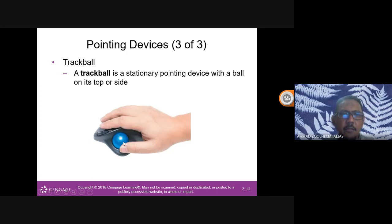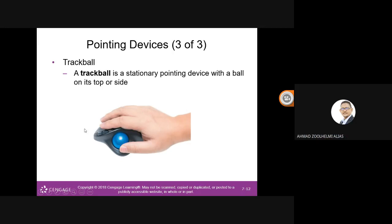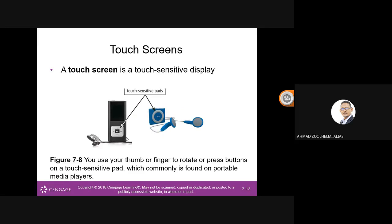A trackball is a stationary pointing device with a ball on its top or side. You roll the ball with your thumb and the pointer moves accordingly. It can be on top or on the side depending on the type. Another input device is the touchscreen — a touch-sensitive display.